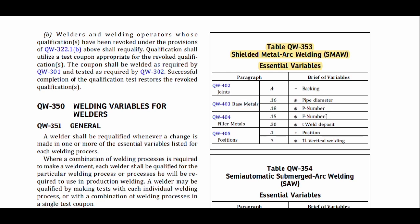The fifth essential variable is F number. The sixth is thickness of weld deposit, both associated with the filler metal. The seventh and eighth are position and vertical welding, which are associated with position.